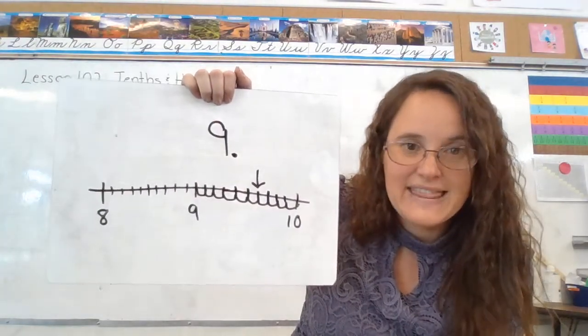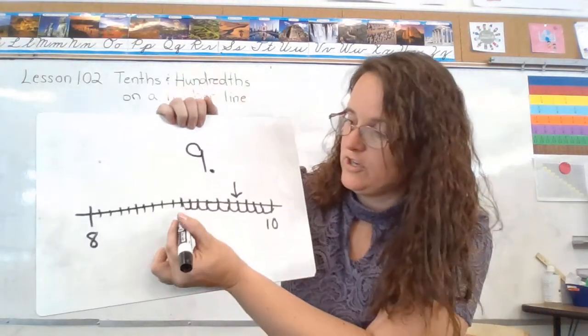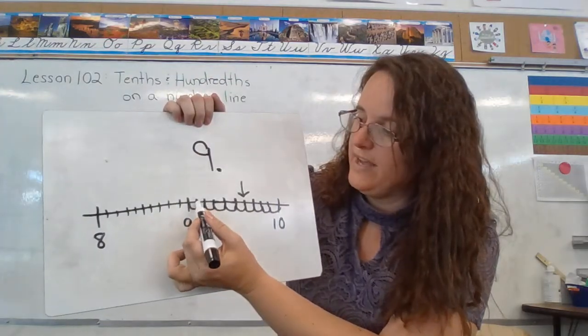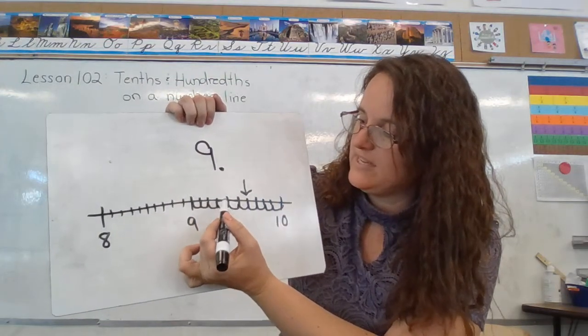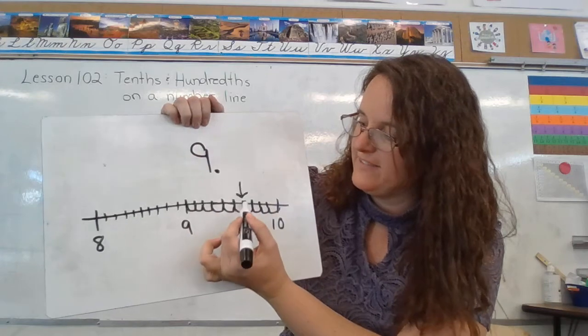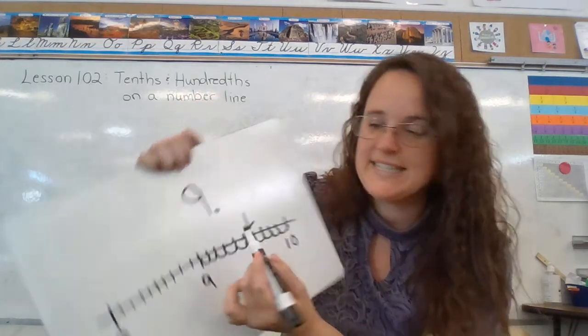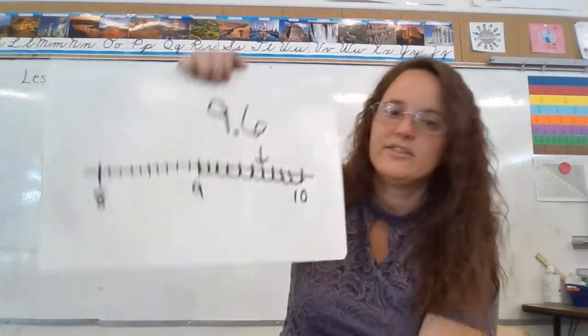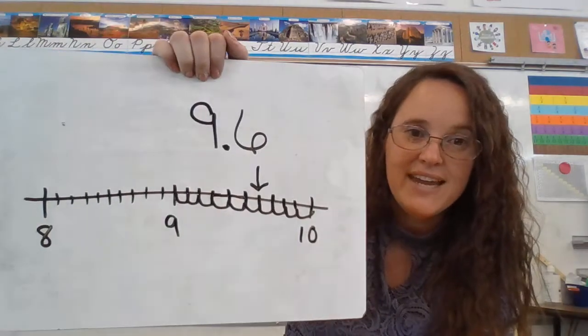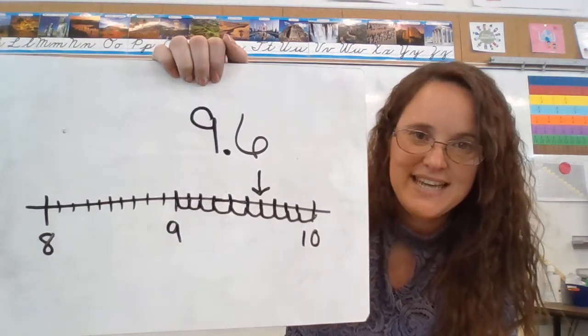So I'm counting tenths. So start at the 9, and we can count 1 tenth, 2 tenths, 3 tenths, 4 tenths, 5 tenths, 6 tenths. So the arrow is pointing at 9 and 6 tenths.